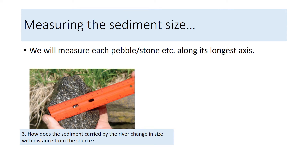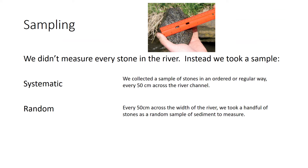Our method for measuring the sediment size was that at each of the three sites we selected a sample of sediment from the river and measured it using a ruler along its longest axis. We couldn't measure every stone in the river, so we used sampling. At each site, across the width of the river, we took a sample every 50 centimeters — this was systematic sampling. It was also random sampling because at each 50 centimeter point we reached into the river and collected a handful of stones without looking.